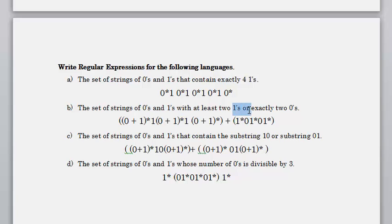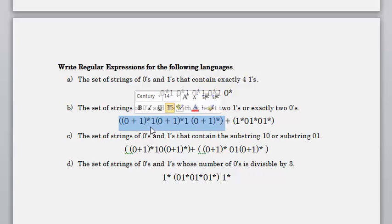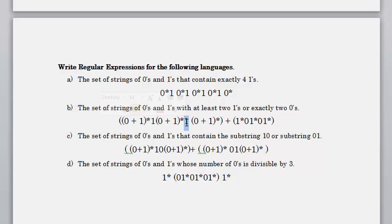To fulfill exactly two zeros: similarly to the previous example, we have exactly two zeros and place 1* in the beginning, middle, and end — since it wasn't specified that the zeros must be consecutive, ones can appear in between. For at least two ones: both ones must be present, with zero or more zeros or ones in between, before, and after. At least two ones means the minimum is two, but you can have more.